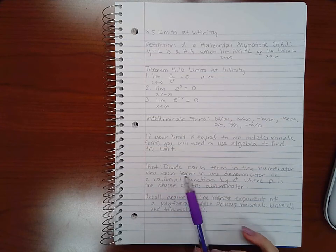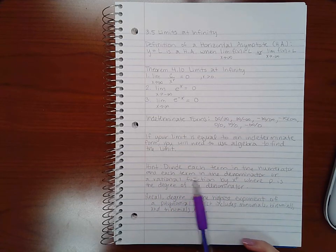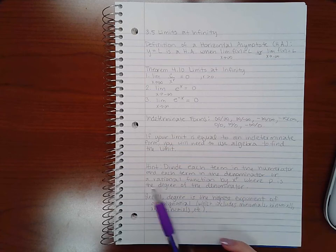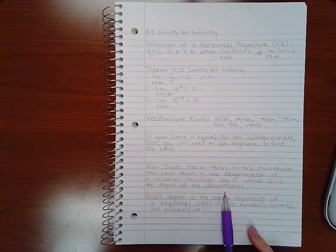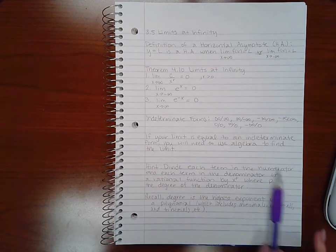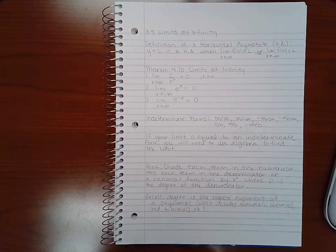Now, here it says hint: divide each term in the numerator and each term in the denominator of a rational function by x to the power p, where p is the degree of the denominator. And we'll talk about how to do this as we go through our problems, because this is the technique we'll be using.